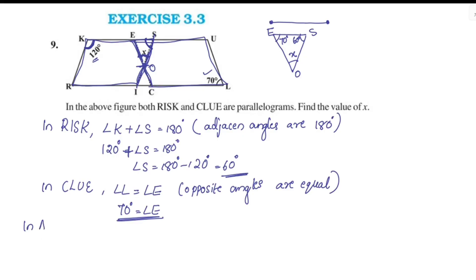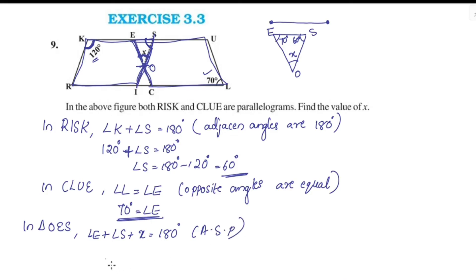In triangle OES, using the angle sum property: Angle E plus Angle S plus x equals 180 degrees. Angle E is 70 degrees and Angle S is 60 degrees. So 70 plus 60 plus x equals 180 degrees.